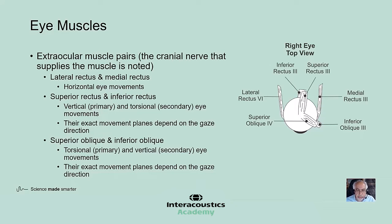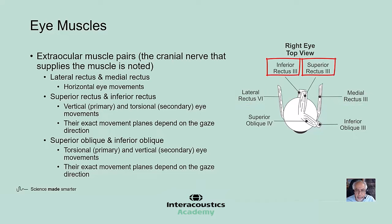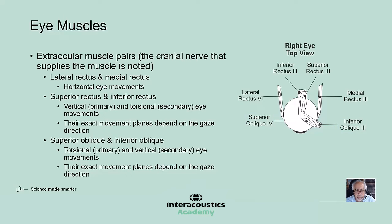Now let's consider the eye muscles involved in different types of eye movements. Each eye is moved by six muscles that form three extraocular muscle pairs. Under normal conditions, these muscle pairs work in a push-pull manner, meaning whenever one is contracting, its synergistic pair is relaxing. The lateral and medial rectus muscles are responsible for horizontal eye movements. The superior and inferior rectus muscles are primarily responsible for vertical eye movements but have a secondary role in torsion, with the amount depending on gaze direction. The superior and inferior oblique muscles are primarily responsible for torsional eye movements but have a secondary role in vertical eye movements.